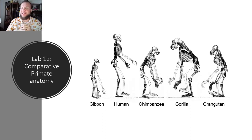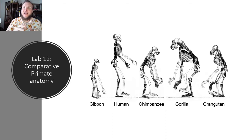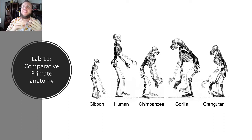Hello everyone. Hope you're having a good Thursday. Today we're going to look at comparative primate anatomy. Last week we talked about behavior, and this week we're connecting that behavior to anatomy and seeing how morphological changes in primate anatomy are adapted to behavior.